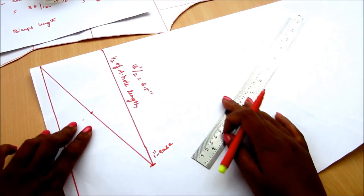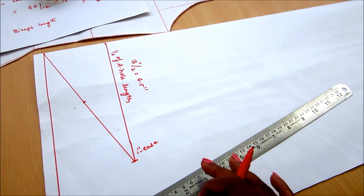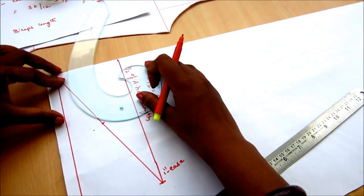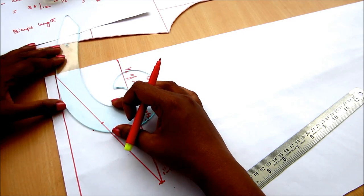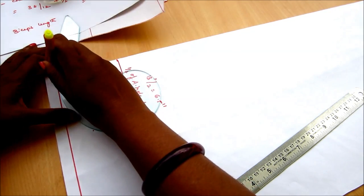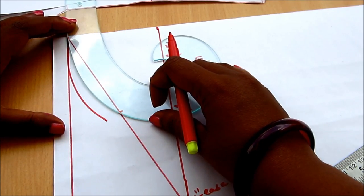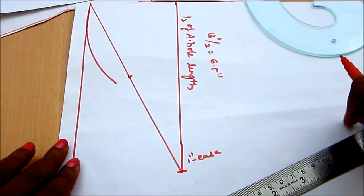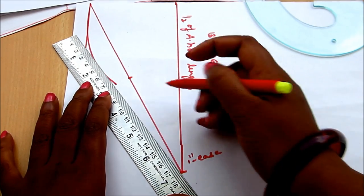To draft the back sleeve pattern, now from the top to this point connect through the curved line, through the curved line using the French ruler or else you can draw it free-handedly. So now I've joined the curved line from this point to down, connect with the straight line.